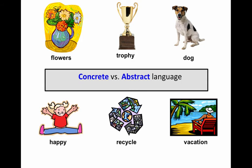The next dimension is concrete versus abstract language. Some of the language we use is concrete — it refers to things that we could either touch, see, or visualize fairly readily. For example: dog, trophy, flowers.